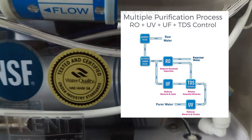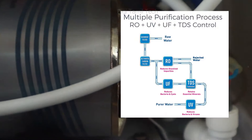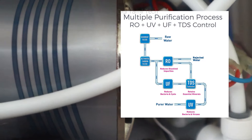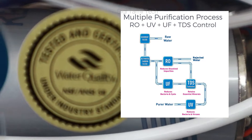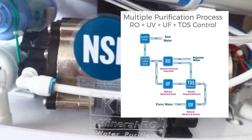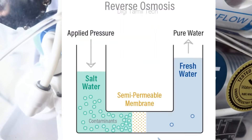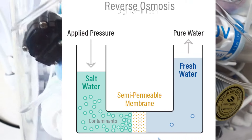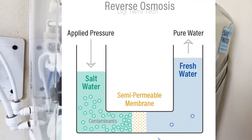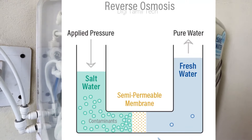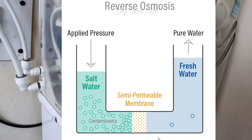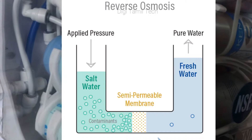RO means Reverse Osmosis. This is a normal water purifier process. The reverse osmosis process is simple — we apply pressure to push water through a membrane. That is the concept.